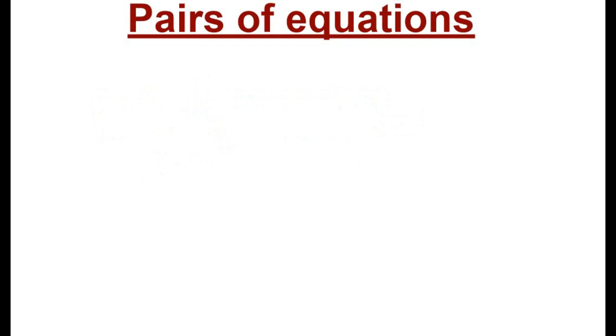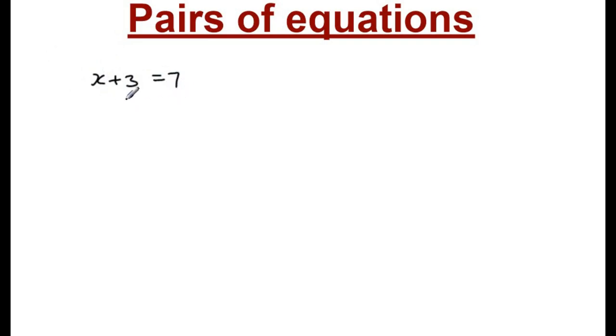Before starting the new chapter on Pairs of Equations, let us recall what a symbol equation is. For example: when a number added with 3 gives 7. We don't know the number, so we suppose it is x. If x added with 3 gives 7, we find the value of x — we know it is 4. These kinds of equations with one variable, we call symbol equations.